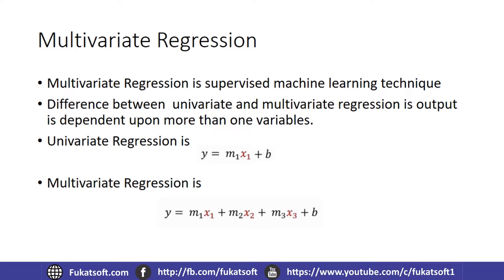The basic difference between univariate and multivariate regression is the number of independent variables — the output depends on more than one variable. For univariate regression, the equation is y = m1·x1 + b, where m1 is the coefficient, x1 is the input feature, and b is the y-intercept. In univariate regression, the number of input features is just one.